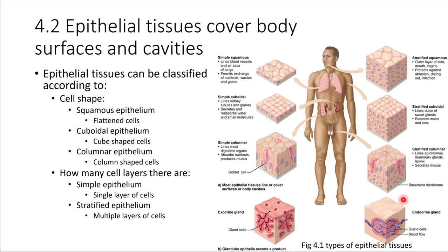Now let's look at the two types of glands. Here is an exocrine gland — cells in this area produce something and secrete it out into a duct, which leads to the surface. Contrast that with an endocrine gland: the gland cells produce things, but there's no direct pathway out to the surface. Instead, they produce the material, it remains in the tissues, and blood flow wicks it away — the bloodstream picks up those substances and carries them into circulation.